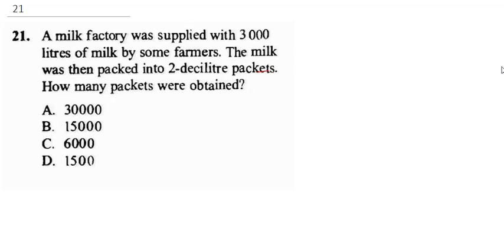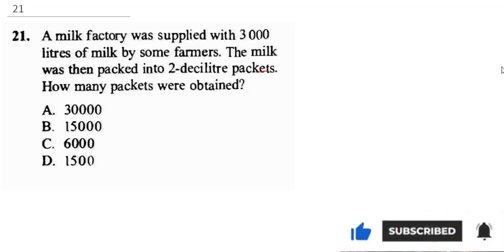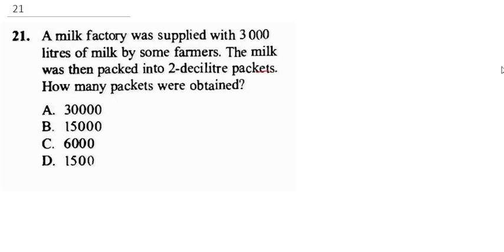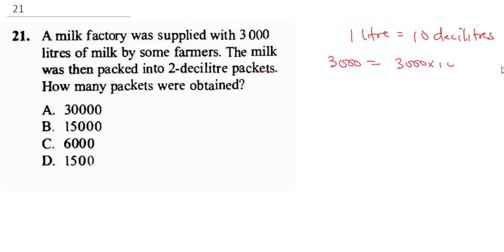Welcome back. A milk factory was supplied with 3,000 liters of milk by some farmers. The milk was then packed into two-deciliter packets. How many packets were obtained? The first thing you need to establish is that one liter gives you 10 deciliters. So that means 3,000 liters is going to give us 3,000 times 10, which equals 30,000 deciliters.